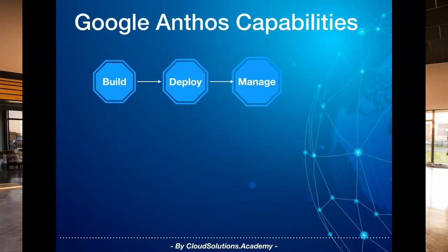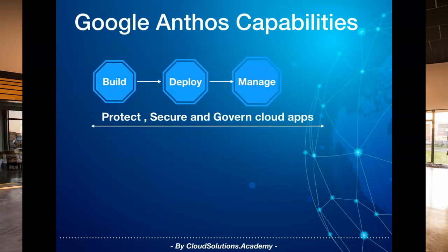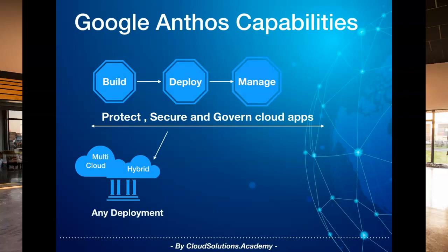The third key aspect that Anthos provides is this whole notion of protecting your applications, governing it, securing it, and providing you tools and methodologies to address data governance and various regulation requirements. For instance, let's assume you're running your cloud application in the Asian region and you want to extend it to run in a UK region where GDPR compliance exists, or maybe a US region where you want to comply with the California Consumer Privacy Act. In a multi-region regulated environment, you need to ensure you deploy cloud applications to the right region and data resides in the respective region.